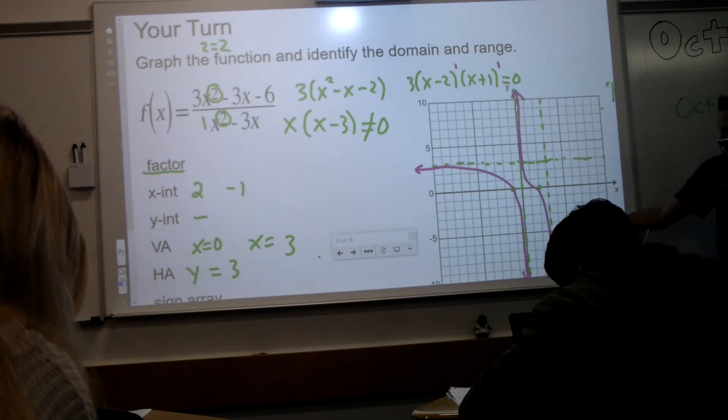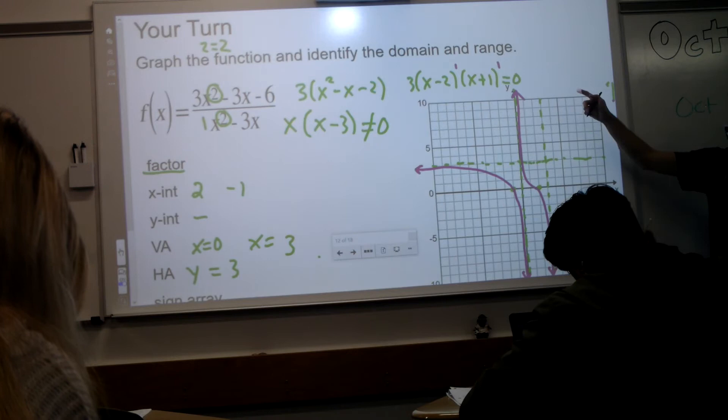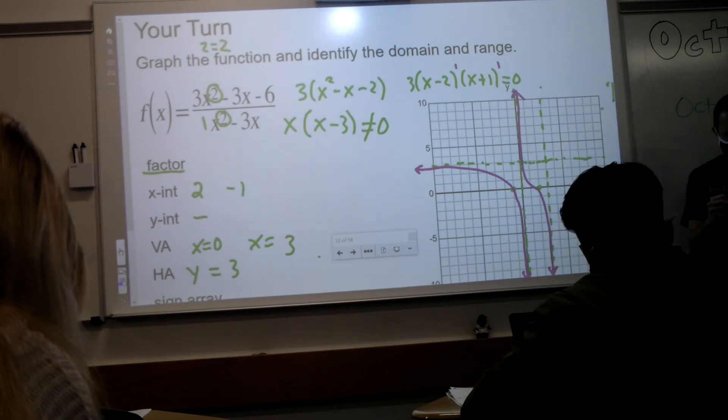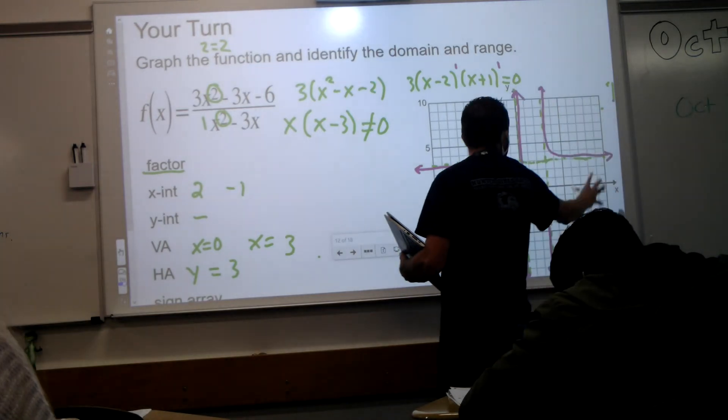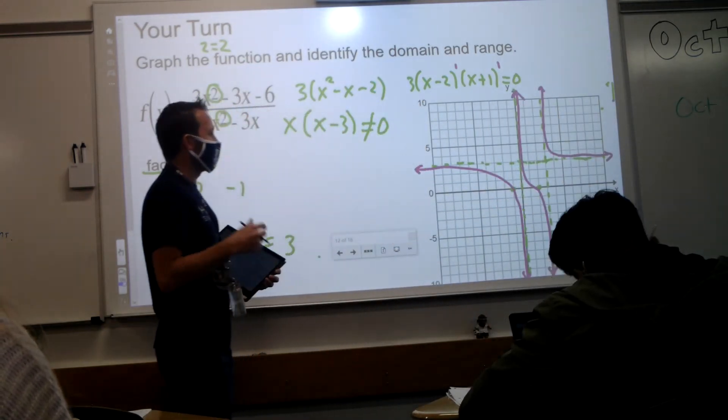So I'm going like that. Which means if I'm going down, what's happening on the other side is going up. Now, another way I know that this right side is up is because there's no x-intercepts over here. There's your graph.